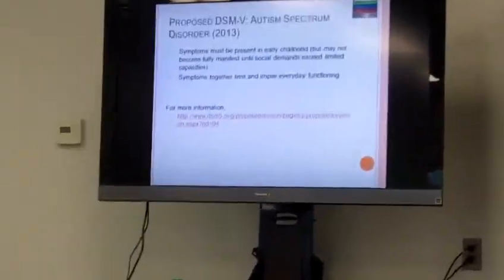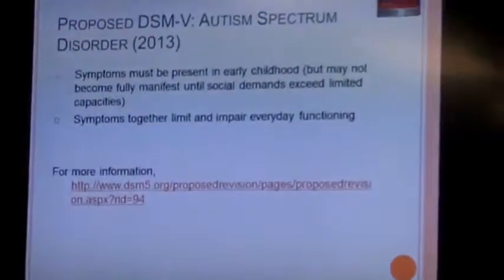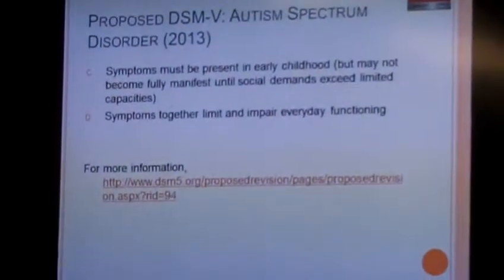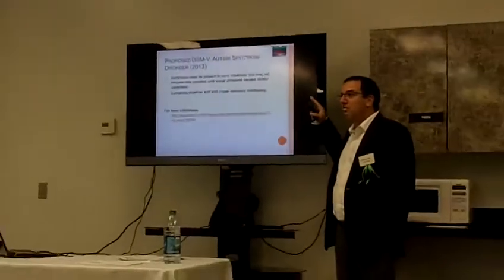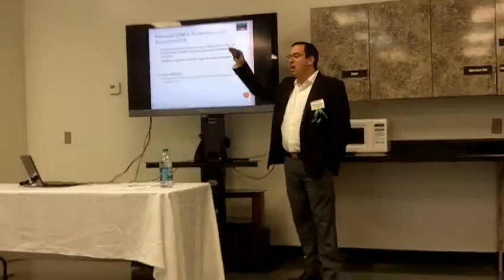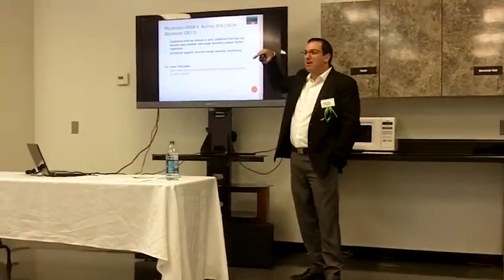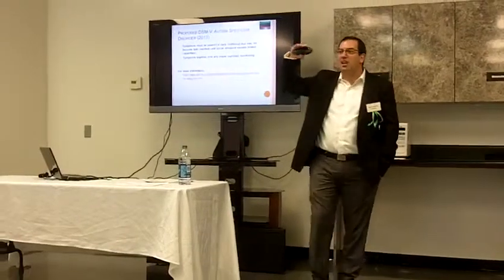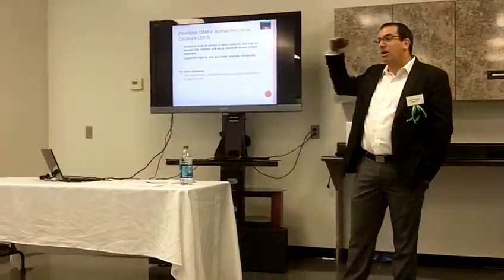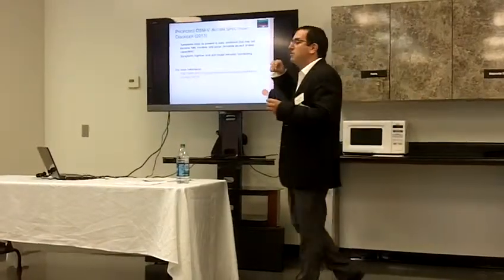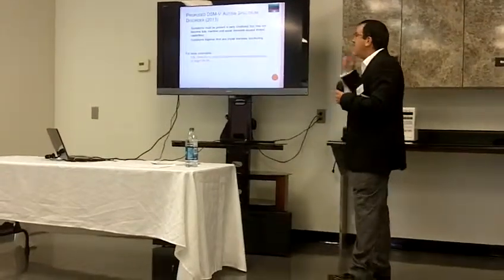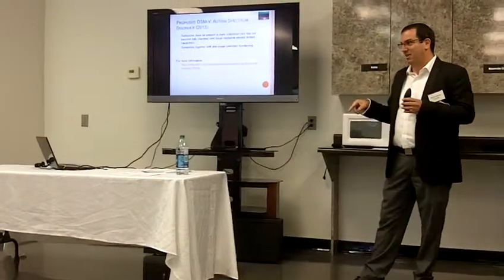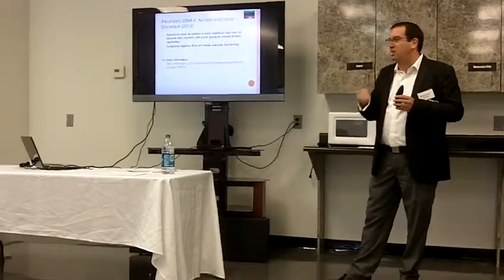They also say the symptoms must be present in early childhood, but may not become fully manifested until the social demands exceed the individual's capabilities. They're trying to catch those people with Asperger's that often go through the system without being identified — the somewhat quirky kids who don't have many friends because the social demands on them aren't high enough. And it must impair everyday functioning; you can't just have these traits without functional impact.